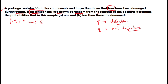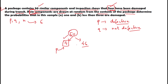From the 50 components, 4 are damaged and the rest — 46 — are not damaged or not defective. The damaged ones are considered as P. So P = 4/50, and dividing gives P = 0.08.